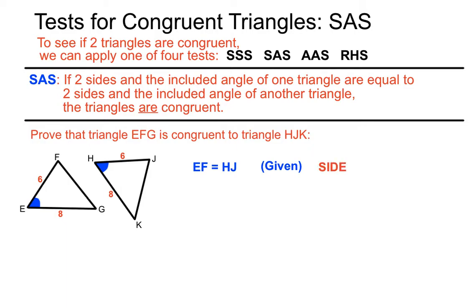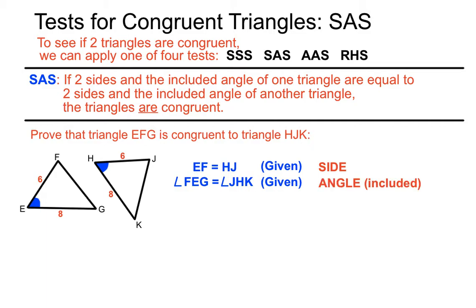Because this is the SAS test, we're looking to make a statement about the included angles. I've shaded each of those angles blue. If they've got the same symbol or the same colour or the same marking, we can trust that they're meant to be equal. So we make an angle statement: angle FEG equals angle JHK. Remember, angles are named for the vertex, and the vertex symbol is in the middle — this is angle E and angle H. Those are equal because they're given the same symbol on the diagram. It's definitely the included angle, as the blue marking is the angle in between the six and eight sides on both triangles.